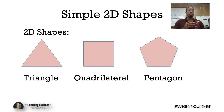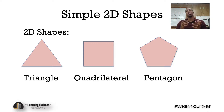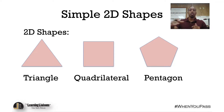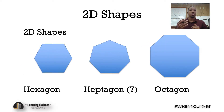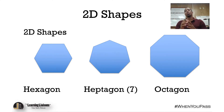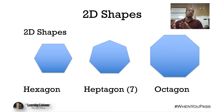We're going to name them by the number of sides they have, starting with a triangle. Any shape with four sides is a quadrilateral — not a square or rectangle specifically, but a quadrilateral. Five sides is a pentagon, six sides is a hexagon, seven is a heptagon, eight is an octagon, nine is a nonagon, and ten is a decagon. Familiarize yourself with these simple 2D shapes, because several questions will be based on that knowledge.